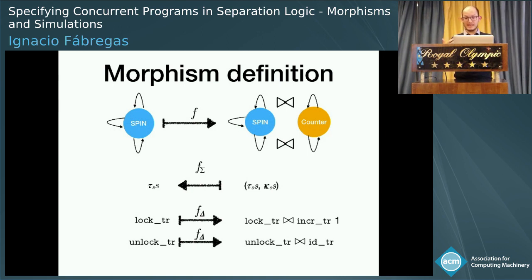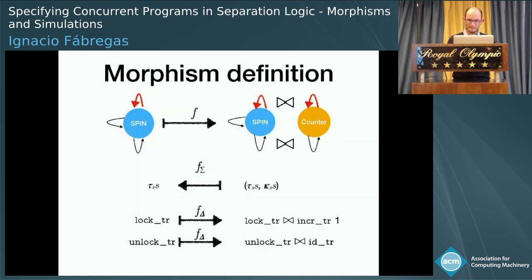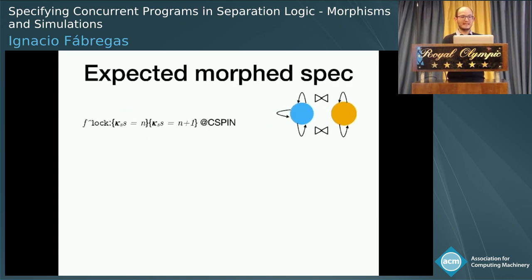I'm going to call this CSpin — the definition of the morphism. The states in CSpin are going to be pairs: one component talks about the counter and the other about the spin, so we have some histories and some numbers. The morphism on states is just the first projection — it takes only the histories. For the transitions, the locking transition in spin is morphed to the bowtie between the locking transition in spin and the increment-by-one transition. The bowtie means those two transitions are fired together.